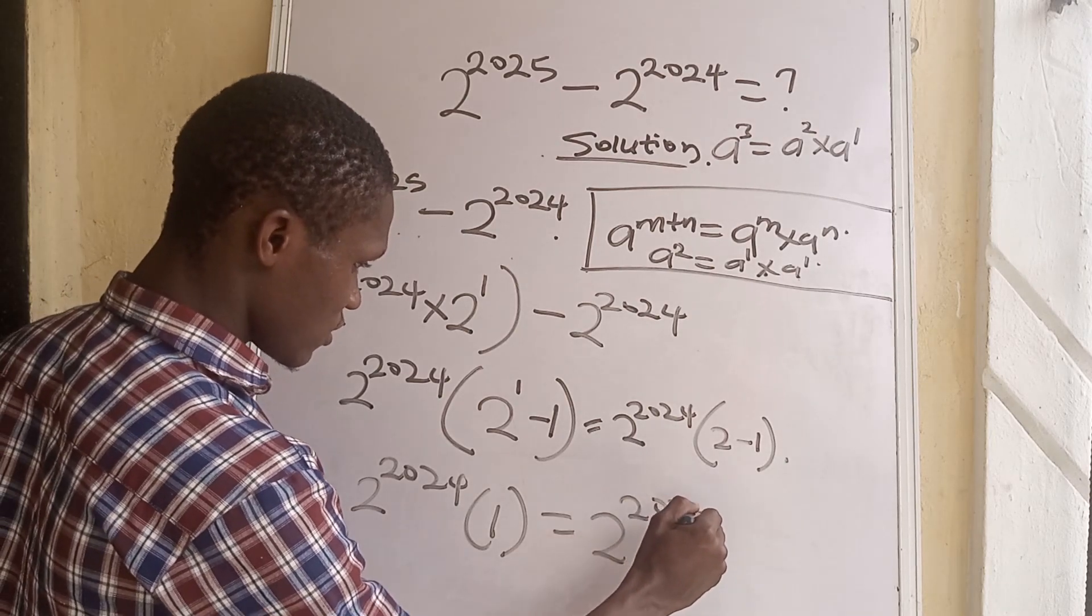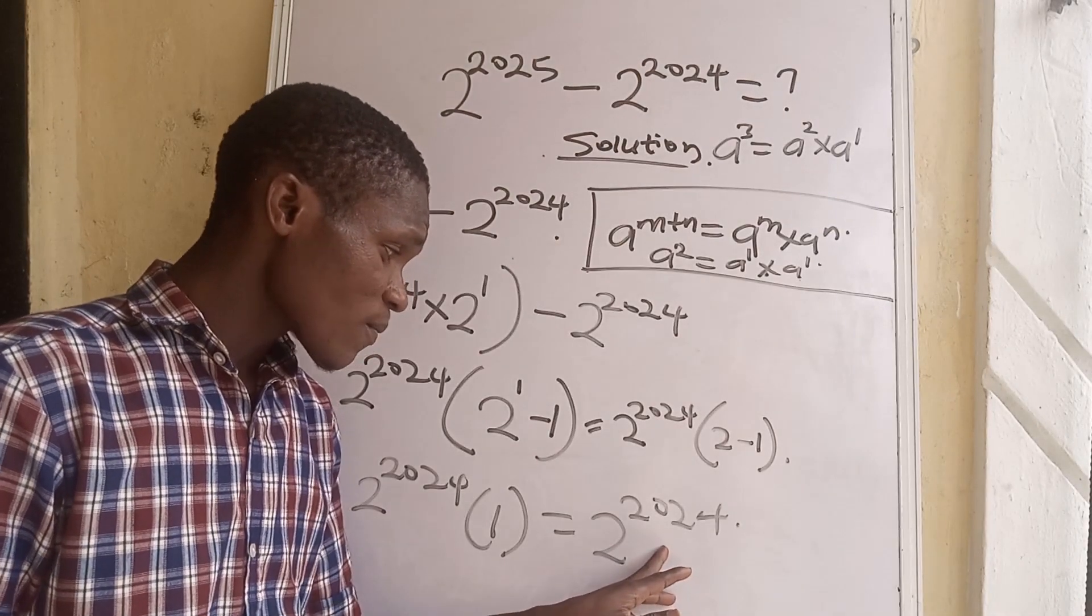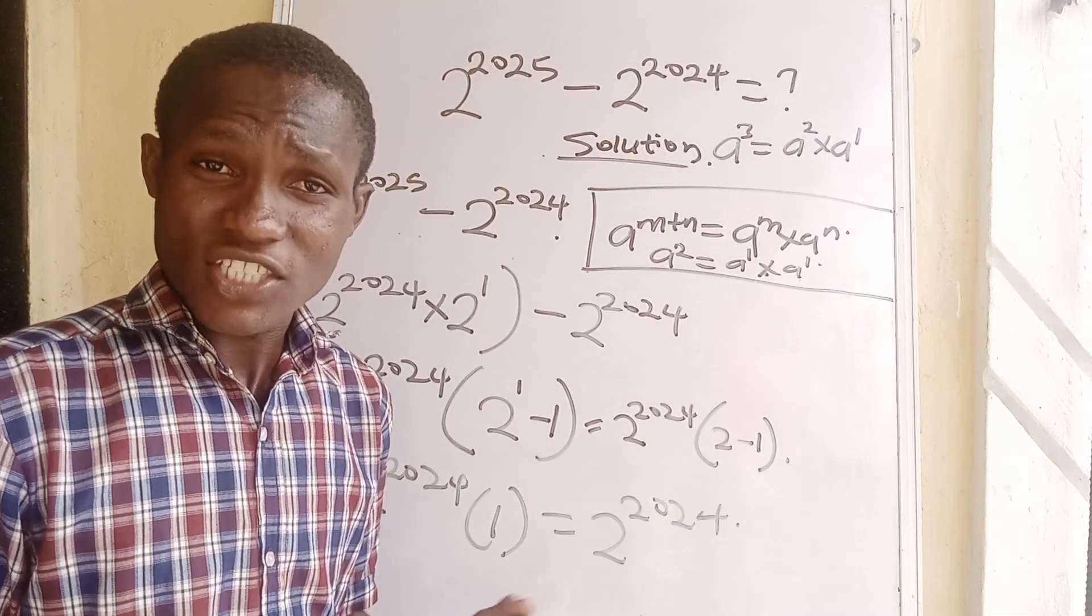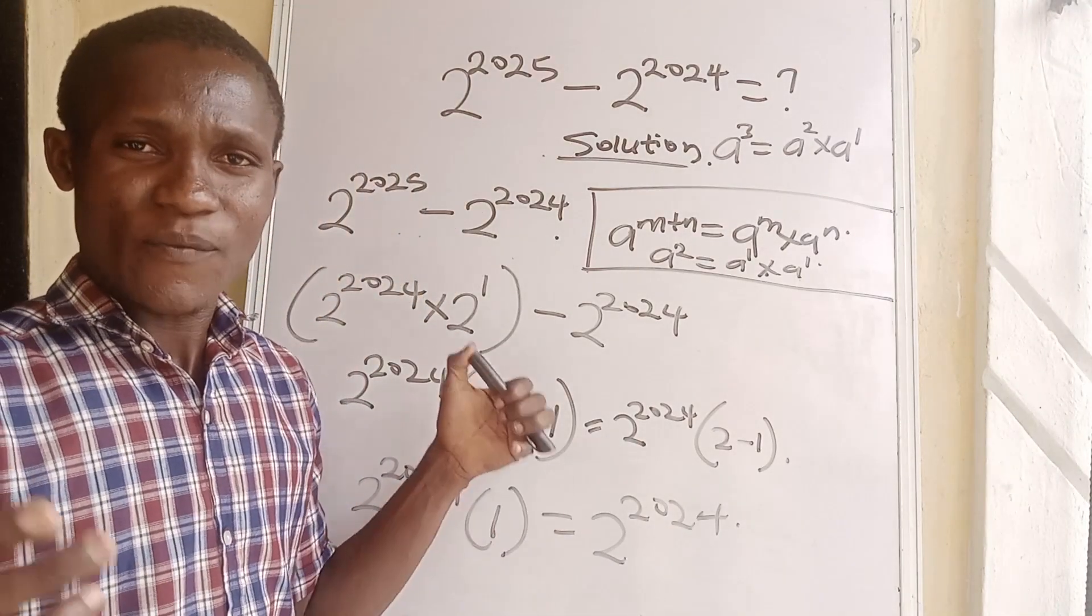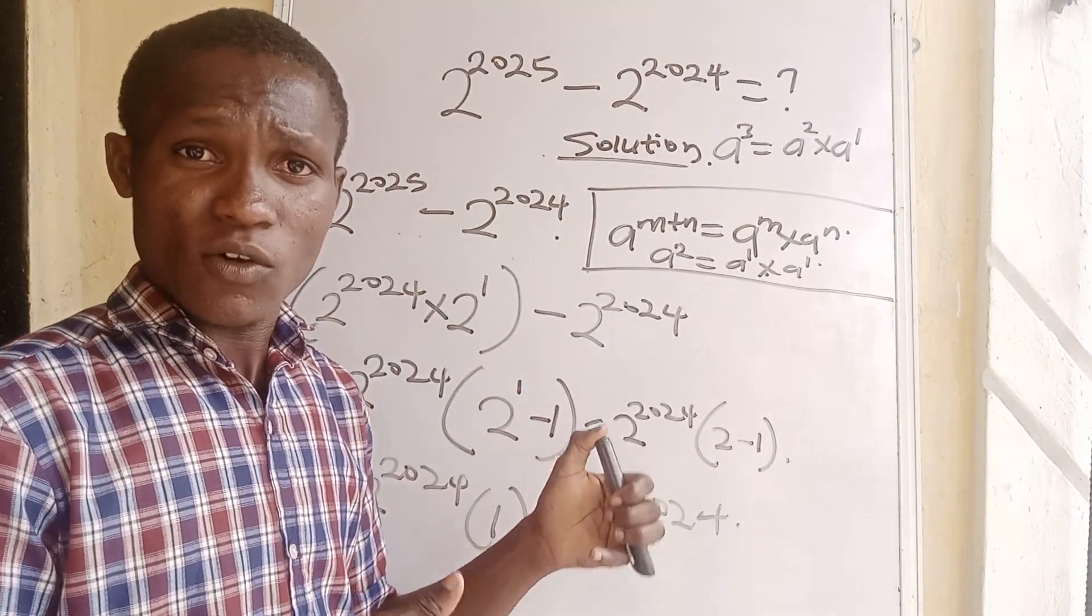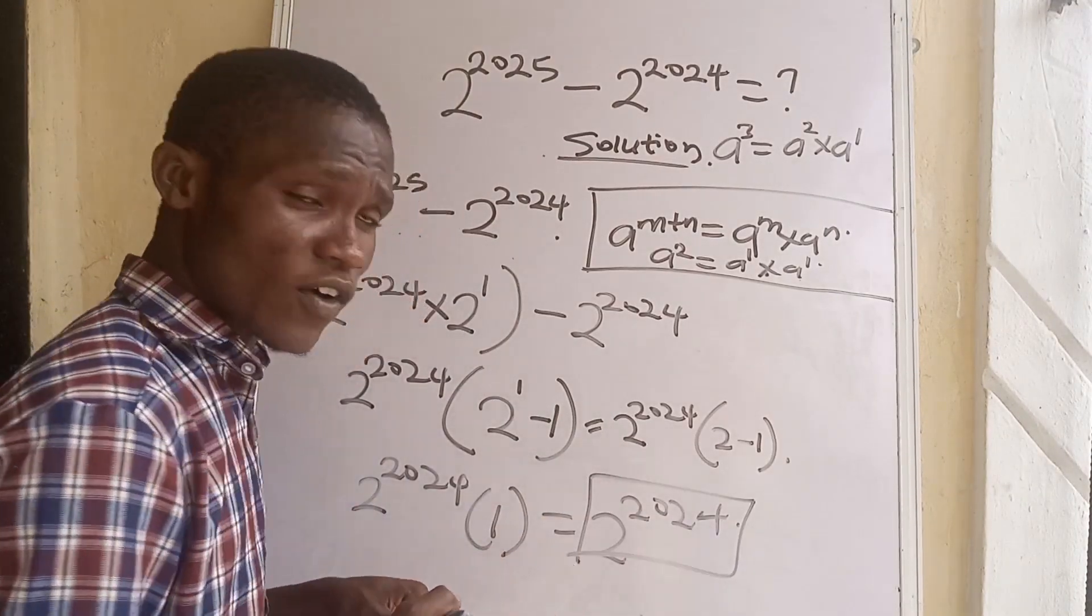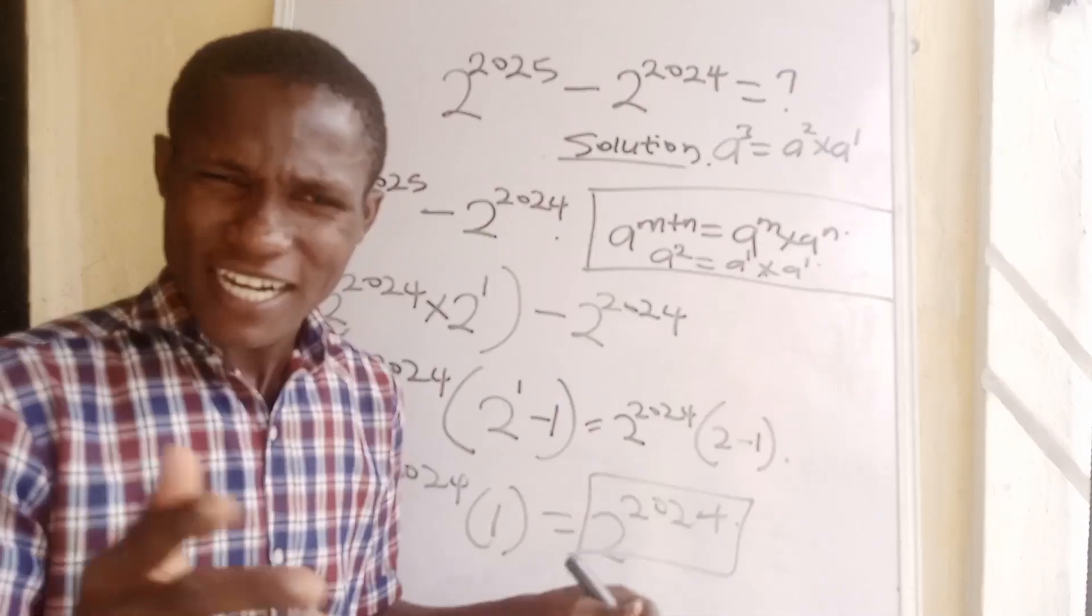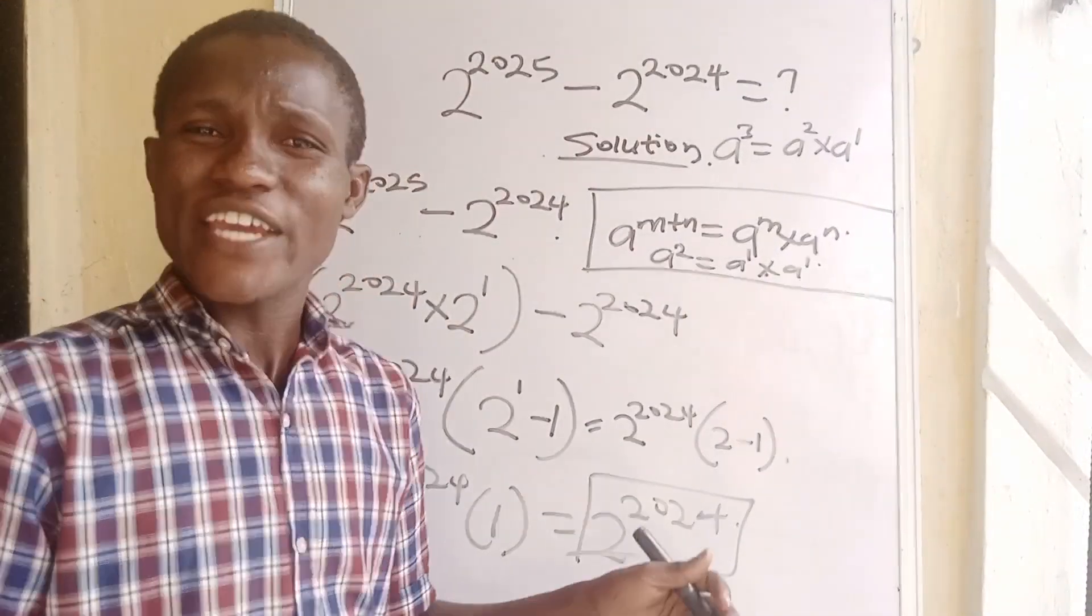So what is the value for 2 to the power of 2024? If you can get that, please drop it in the comment section below. I will check your answer if it is going to tally with mine because I'm going to drop it also on the comment section. I would love you guys to do this for me by dropping 2 to the power of 2024 in the comment section, and guess what, this is going to be the number of years you're going to live on this earth.